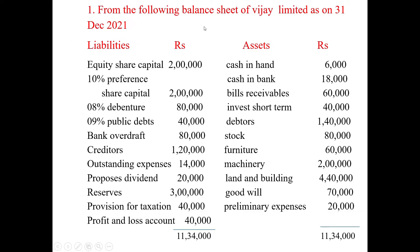Now the question: From the following balance sheet of VJ Ltd as on 31st December 2021 — Liabilities: Equity Share Capital 2 lakhs, 10% Preference Share Capital 2 lakhs, 8% Debenture 80,000, 9% Public Debt 40,000, Bank Overdraft 80,000, Creditors 1,20,000, Outstanding Expenses 14,000, Proposed Dividend 20,000, Reserve 3 lakhs, Provision for Taxation 40,000, P&L Account 40,000.